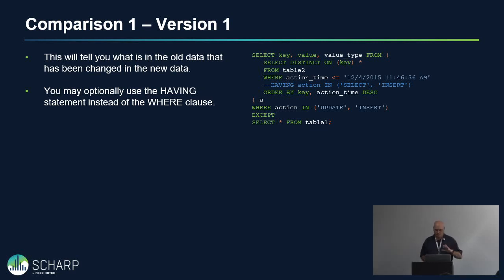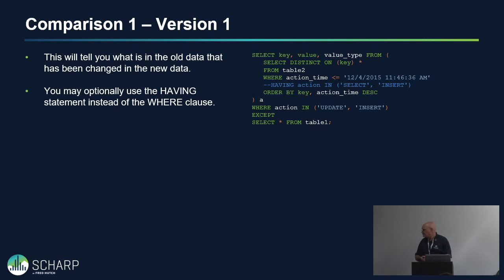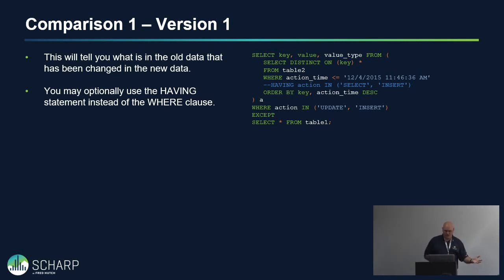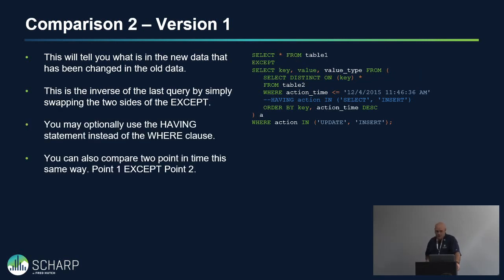For data comparisons over time, Postgres has the EXCEPT command. We can do our time-travel query EXCEPT SELECT * FROM our primary table to see what's in the old data that has changed in the new data. You can invert that to see what's in the new that's not in the old.